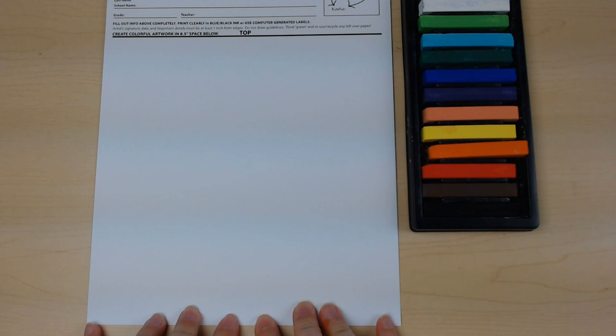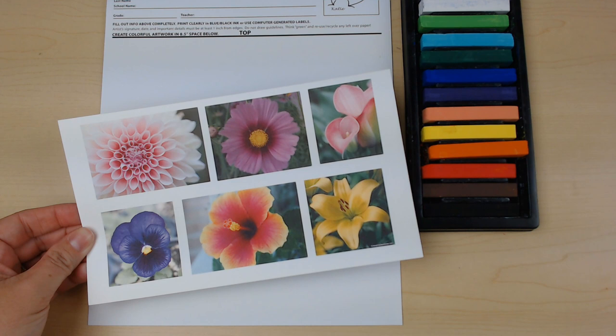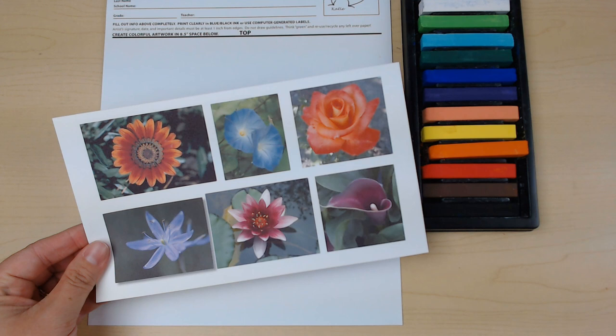You're going to have your piece of paper that will have your name and information filled out in the top. And we are going to start by drawing our flower. Now we have some examples that you can look at. This card here has some flowers on either side, so you can get an idea of what flower you might want to draw.